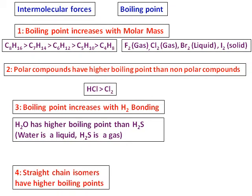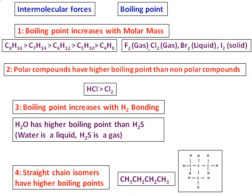The fourth reason which affects boiling point is that a straight-chain isomer will have a higher boiling point. For example, the two compounds given — CH3CH2CH2CH3 and its branched isomer — both have 4 carbons and 10 hydrogens. But because of the way they are arranged, one in a straight chain and the other in a branched chain, the straight-chain compound, in spite of having the same molar mass, will have a higher boiling point.